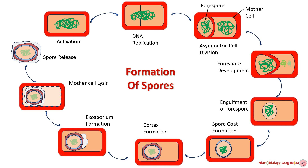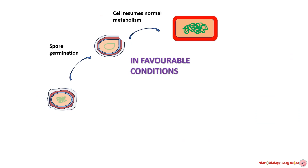The mature bacterial spore is now highly resistant and capable of surviving harsh environmental conditions such as heat, radiation, and desiccation. It can remain dormant until conditions become favorable again. When environmental conditions improve, a spore can germinate to form new vegetative bacterial cells — germination involves breaking down the spore coat and reactivating cellular metabolism.